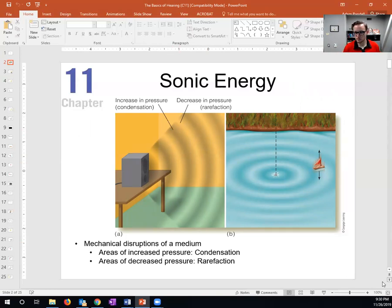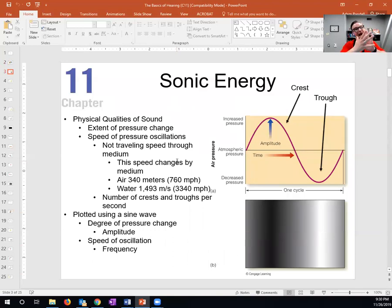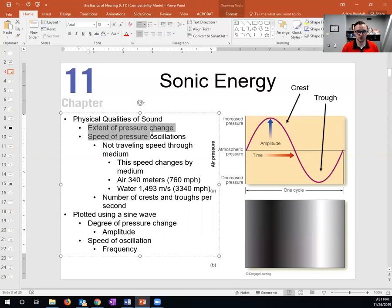How condensed it becomes and how spread out it becomes can change. It can be just barely condensed and just barely rarefacted, or it can be super condensed and super rarefacted. The height of the crest plots how much it's shoved together, how much the density is increased, and the trough represents how much the air molecules are rarefacted during periods of rarefaction. The crests and troughs plot the extent of pressure change—how much pressure increases and how much pressure drops. This middle line is your standard pressure, atmospheric pressure, whatever the air pressure is around.